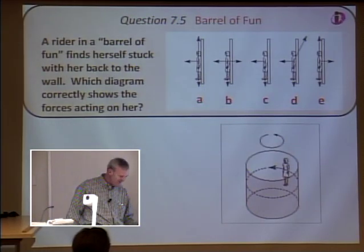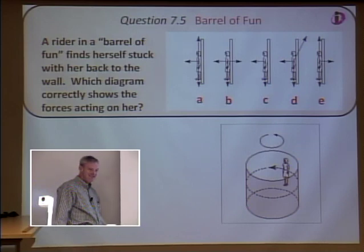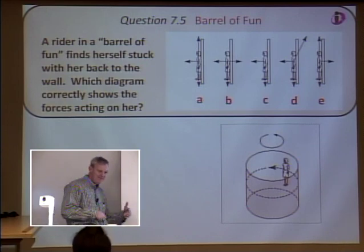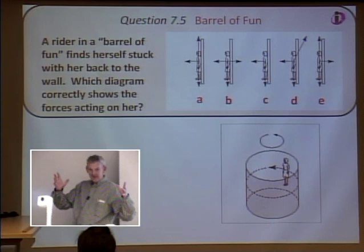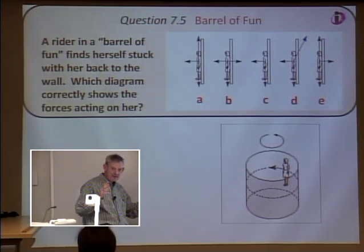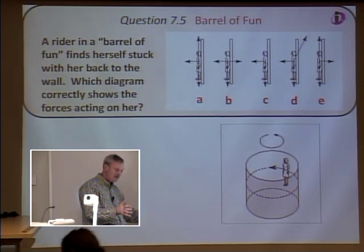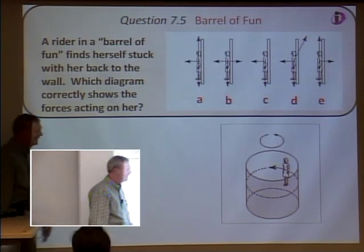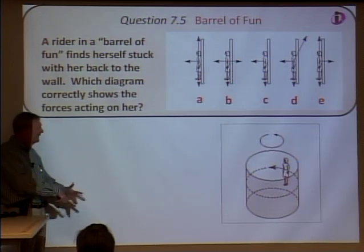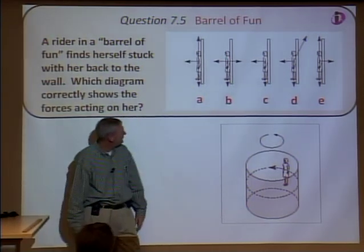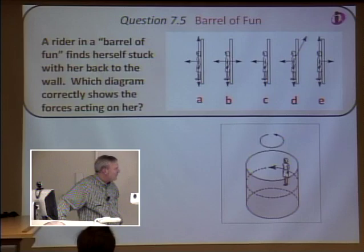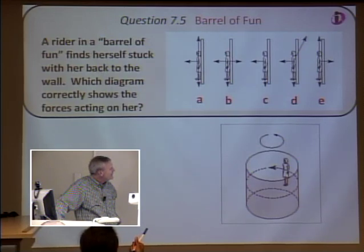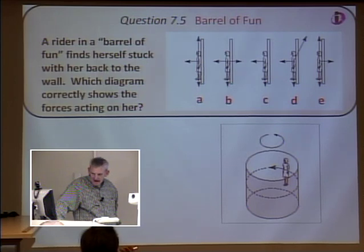That one causes problems because while the omega is the same, the tangential velocity v = rω is larger for the outer circle — so v² is much bigger. Next question: this is a barrel-of-fun or 'Fling' carnival ride — which diagram correctly shows all the forces acting on the girl pinned to the spinning wall?